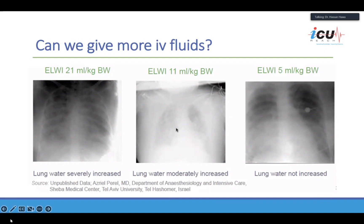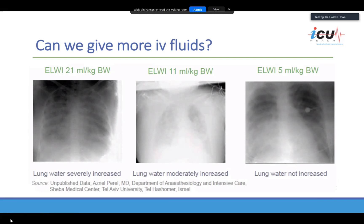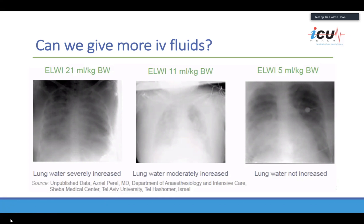Returning to the three hypotensive patients: the first patient had the highest extravascular lung water and would benefit from offloading rather than volume. The second patient's lungs looked very wet but had only a slight increase in extravascular lung water — caution is advised with fluids, monitoring cardiac output and lung water ratio. The third patient's lungs appeared wet but extravascular lung water was only 5 — as a hypotensive patient, this patient would benefit from intravenous fluids since ensuring the tank is full is the first step in resuscitation.